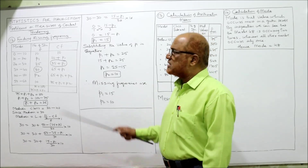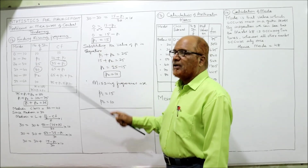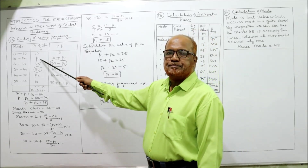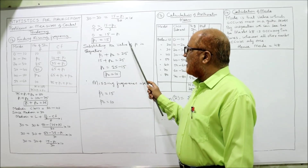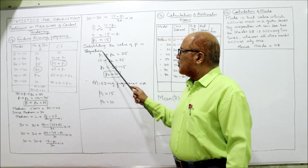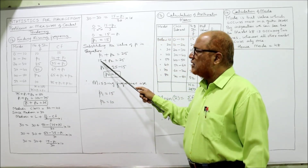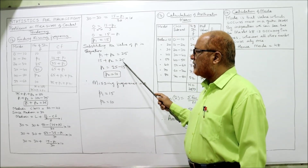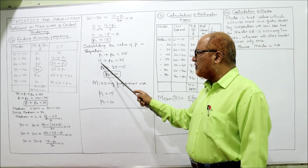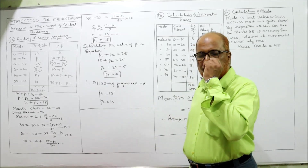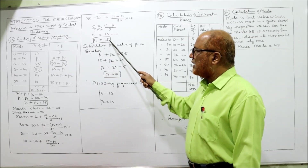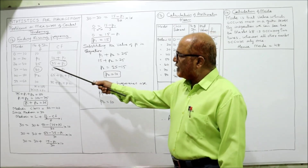Taking −p1 to the left-hand side gives p1 = 15. Now substituting p1 = 15 into the first equation p1 + p2 = 25: 15 + p2 = 25, so p2 = 10. The missing frequencies are p1 = 15 and p2 = 10. This is the end of problem number 12.